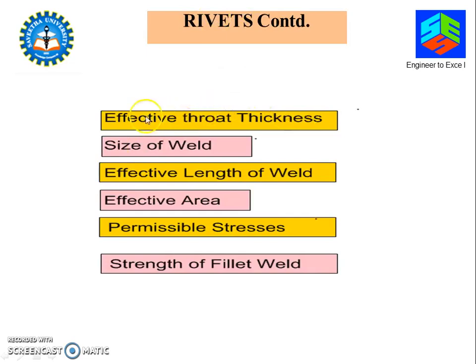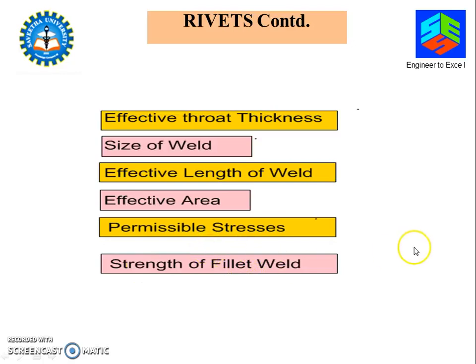Before going into detail, we will go through some technical terms and explain what they are and what their importance is in design. First: effective throat thickness, size of weld, effective length of the weld, effective area, and permissible stresses — which is very important because it governs the design. We'll also cover strength of the fillet weld, what a fillet weld is, and what a butt weld is, because there are two types of welds: fillet weld and butt weld.